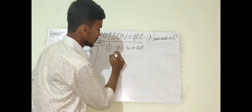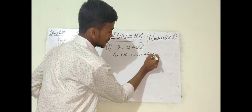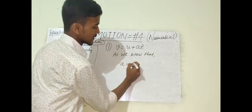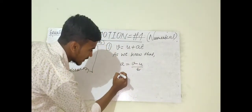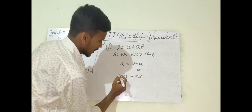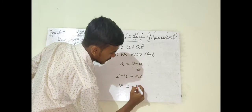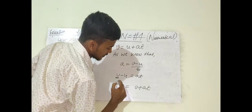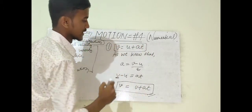Rearranging A = (V - U) / T: multiplying both sides by T gives AT = V - U. Since V is positive, bringing U to the other side gives V = U + AT. That completes the derivation of the first equation of motion.